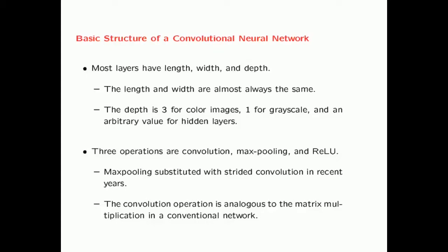There are three basic operations used in the spatial layers: convolution, max pooling, and ReLU. A convolutional neural network is defined as a neural network which performs a convolutional operation in at least one layer. Max pooling has been substituted with strided convolution in recent years. The convolutional operation is analogous to matrix multiplication in a conventional network.